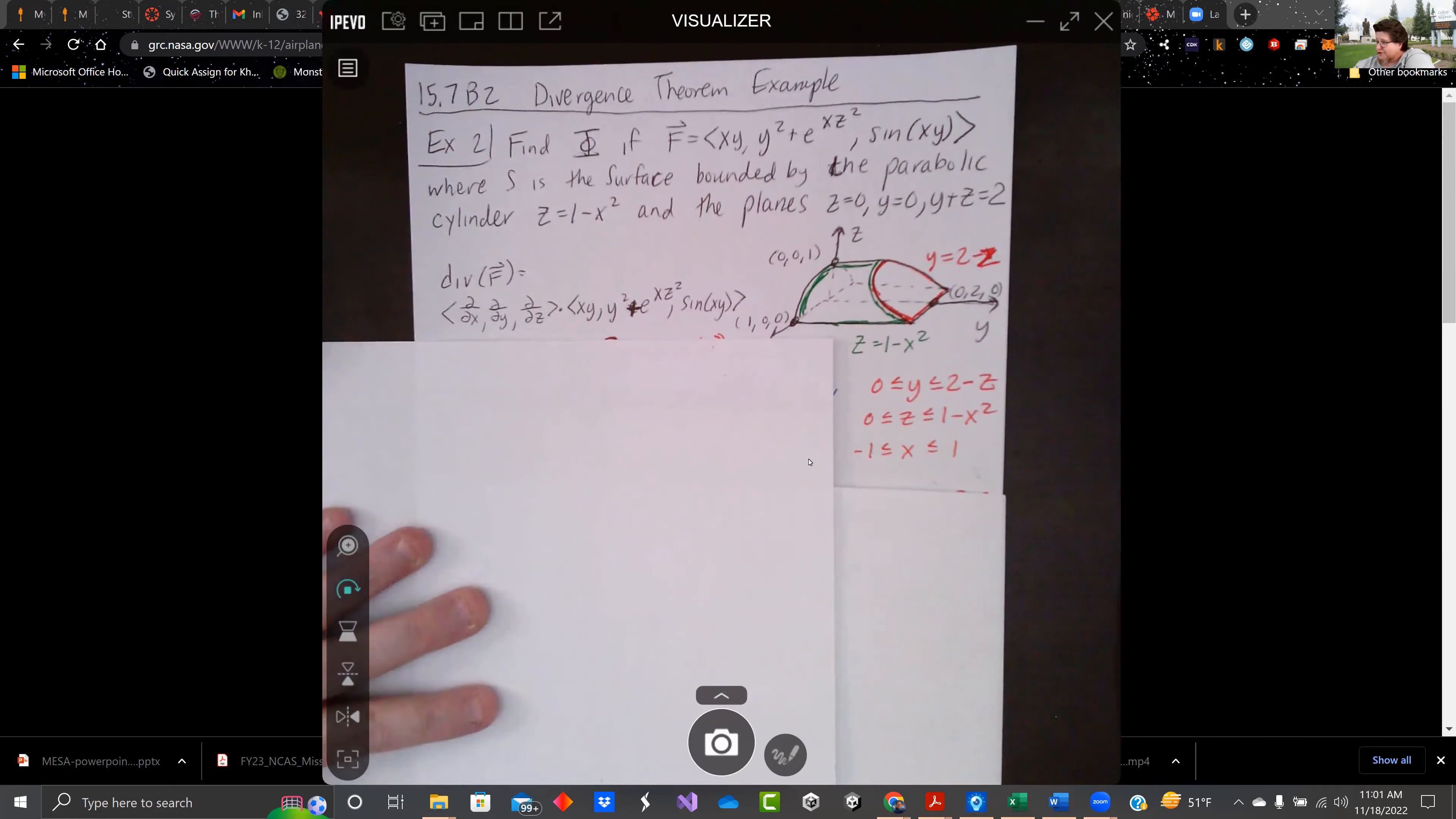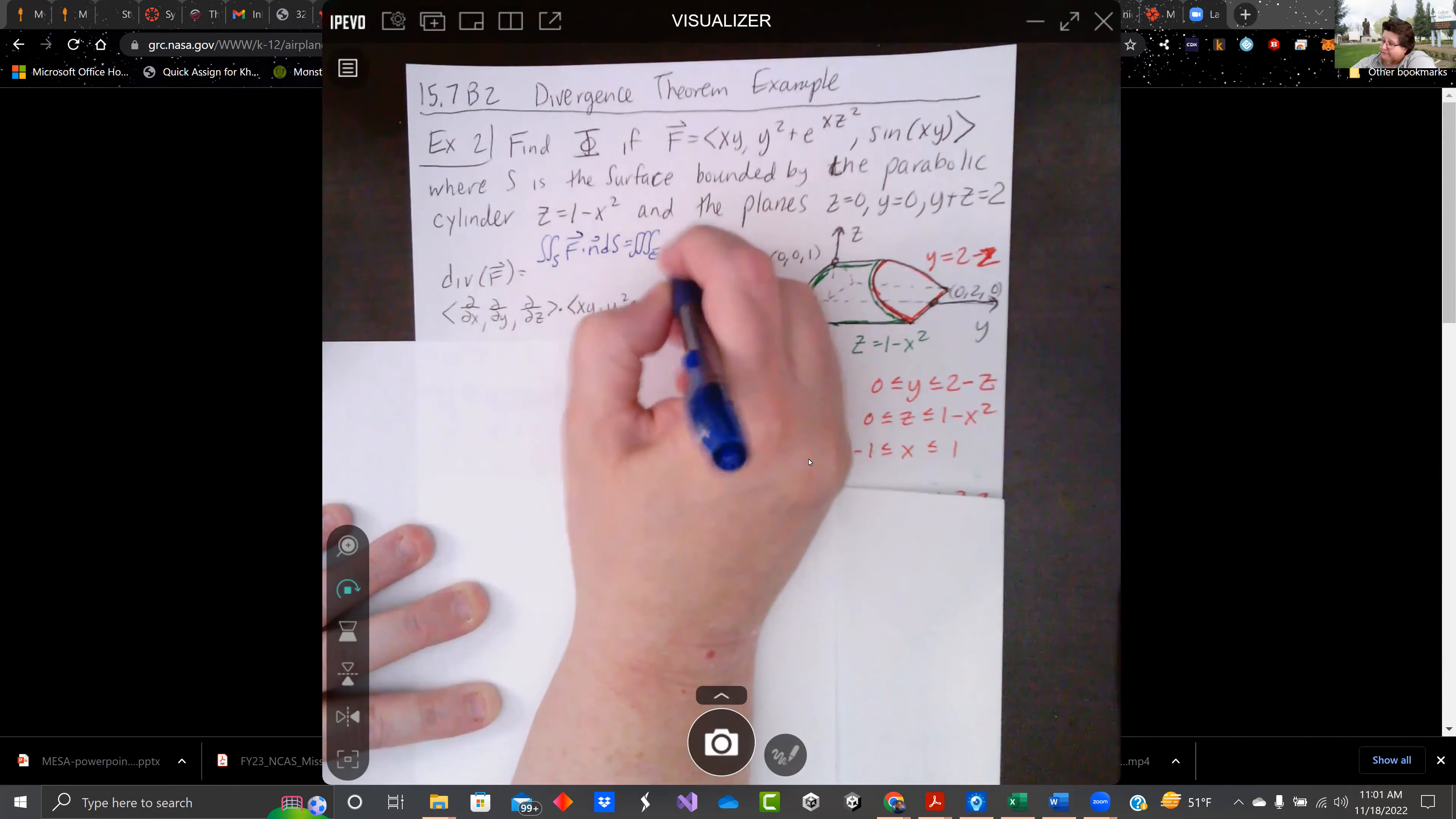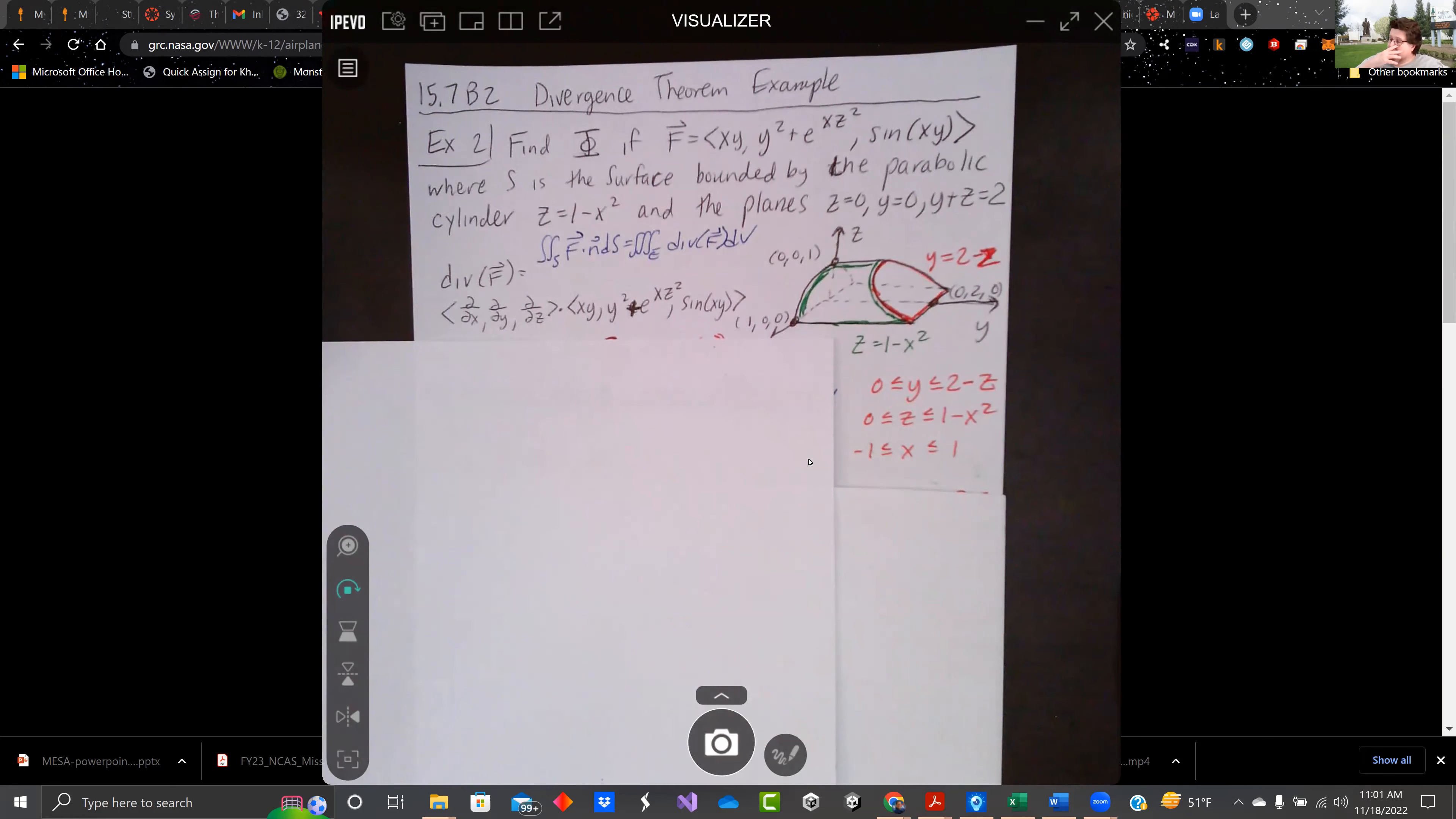Let me rewrite the Divergence Theorem. Surface integral of f dot n ds is the same thing as the triple integral over the volume of the divergence of f dv. So we want to find the flux of f. If f is xy in the x direction, y squared plus e to the xz squared in the y direction, and then sine of xy in the z direction.